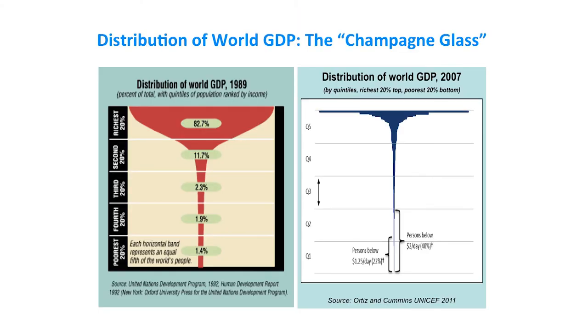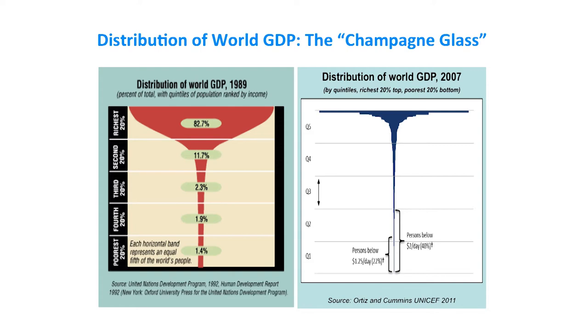These are all different ways to visualize and calculate it, with different methodologies available in the UNICEF paper. This is about the distribution of world GDP, following work initially done by UNDP in 1989 which we updated. What is interesting is that the distribution of world GDP has the shape of a champagne glass — an expression by Peter Heller from the IMF, who when he saw it said, 'Oh God, it has the shape of a champagne glass.'